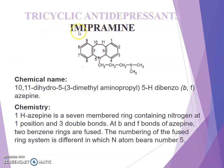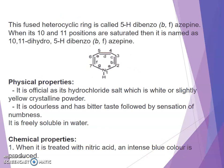Tricyclic antidepressants — example: imipramine. The chemical name is 10,11-dihydro-5-(3-dimethylaminopropyl)-5H-dibenzo[b,f]azepine. Azepine is a seven-membered ring containing nitrogen at one position with three double bonds. At the B and F bonds, two benzene rings are fused. The nitrogen atom bears number 5 in the fused ring system, called 5H-dibenzo[b,f]azepine. When positions 10 and 11 are saturated, it is named 10,11-dihydro-5H-dibenzo[b,f]azepine.